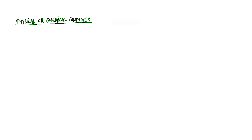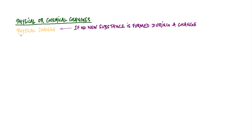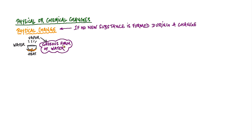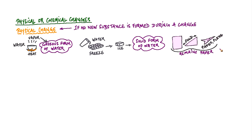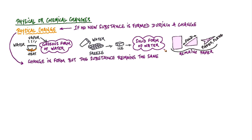Physical and chemical changes. If there is no new substance formed during a change, it's called a physical change. You heat water and it evaporates to form vapor, which is a gaseous form of water. Freeze water and it forms into ice, which is a solid form of water. The substance water remains the same while its form changes. Similarly, if you fold a piece of paper into a paper plane, it changes its form or shape but remains paper. These are all examples of physical changes where there are changes in form but the substance remains the same. Physical changes are temporary and mostly reversible.